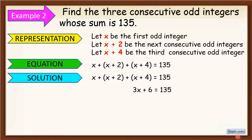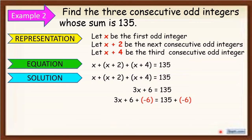Let's simplify. It will become 3x plus 6 is equal to 135. Why 3x plus 6? We combine the x terms to get 3x, and 2 plus 4 gives 6. Now apply APE — add both sides with negative 6 to isolate 3x: 3x plus 6 plus negative 6 is equal to 135 plus negative 6. It becomes 3x is equal to 129, because 6 plus negative 6 equals 0, and 135 minus 6 equals 129.